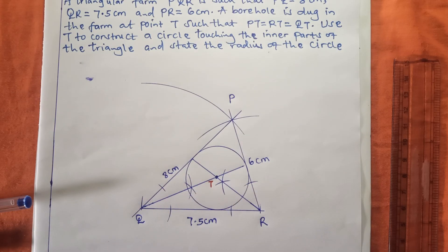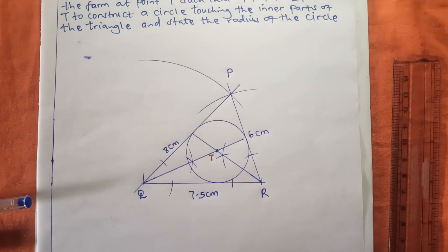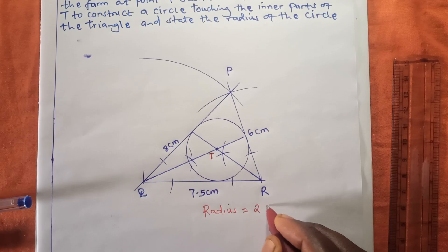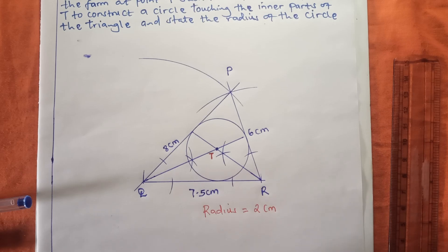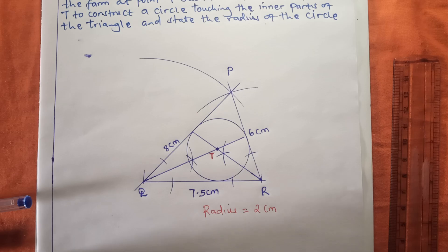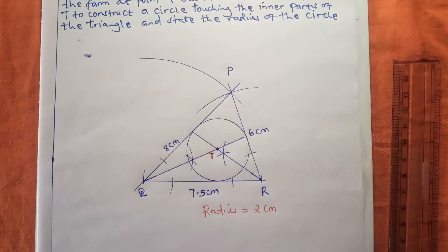The radius of the circle is equal to two centimeters. Remember the key points: anytime you are asked to draw an inner circle, you bisect the angles as I did. After doing that, if the question demands you provide the radius, the length you used to construct the circle is your radius.